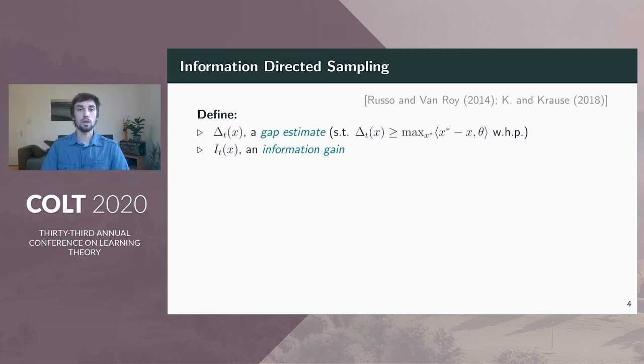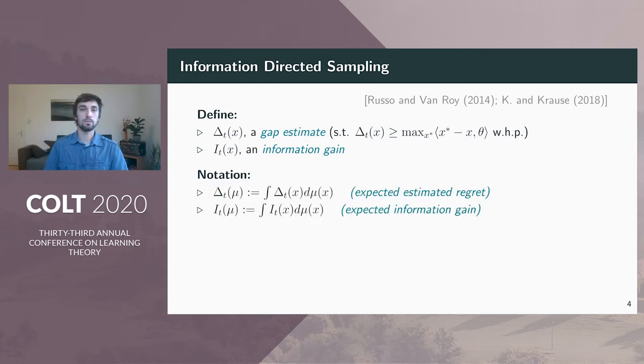We propose an algorithm that is based on the information-directed sampling principle. This method has been introduced by Russo and van Roy for the Bayesian setting, but here we use the frequentist version. To define information-directed sampling, assume we are given a regret estimate which upper bounds the true gaps with high probability. This means a sum over the gap estimates is going to upper bound the true regret. Further assume that we are given a function that measures information gain.